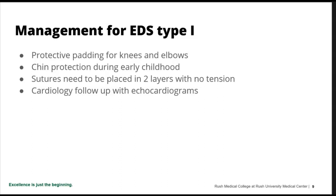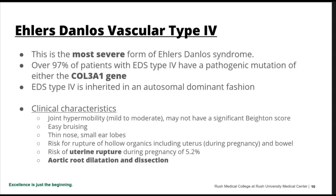The risk of aortic root issues is relatively low compared to Ehlers-Danlos type 4, which is the most severe form of Ehlers-Danlos. 97% will have a pathogenic mutation of collagen 3A1 — a different form of collagen — and pretty much everyone with type 4 EDS has a mutation of this gene. So if I'm thinking someone may have EDS type 4 and they don't have a change of this gene, they probably do not.